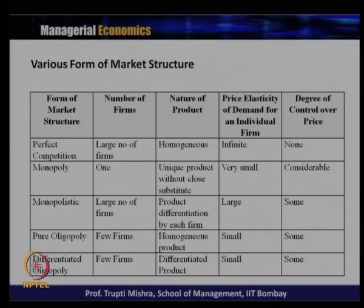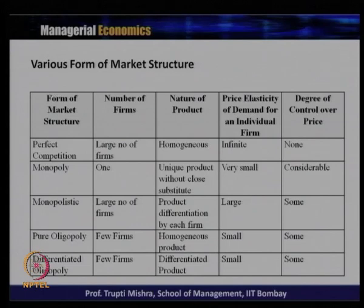Oligopoly is divided into two types: pure oligopoly and differentiated oligopoly. Pure oligopoly has few firms, homogeneous product, small price elasticity of demand, and some degree of control over price. The basic distinction is that perfect competition is one market structure and all others — monopoly, monopolistic competition, and oligopoly — fall under imperfect competition. We will check each market structure individually.